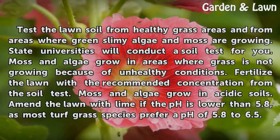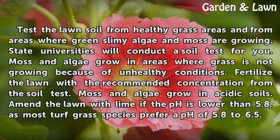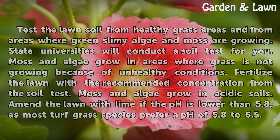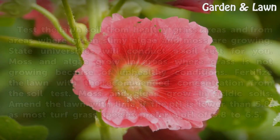Moss and algae grow in acidic soils. Amend the lawn with lime if the pH is lower than 5.8, as most earth grass species prefer a pH of 5.8 to 6.5.